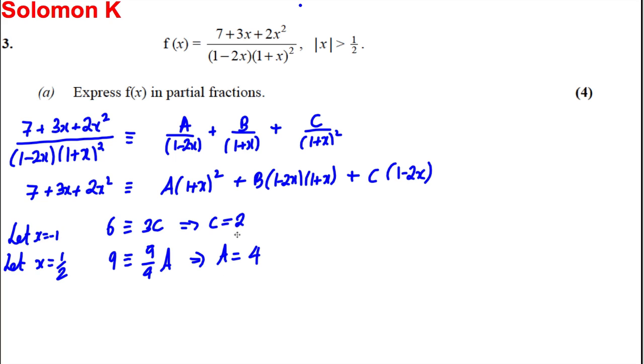So we've got our A and our C. Next thing is to find B. Easiest thing to do here is let x equal 0. This side would be 7, this side would be A, this side would be B, and this side here would be C.